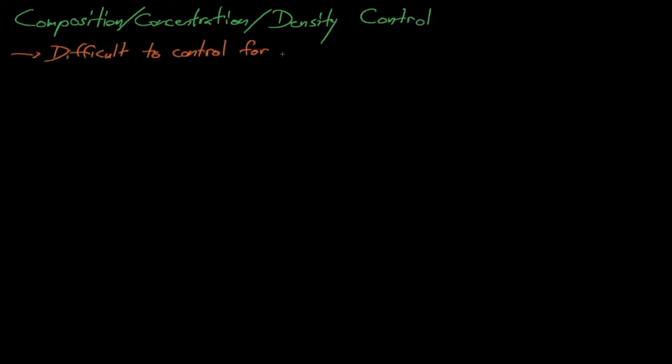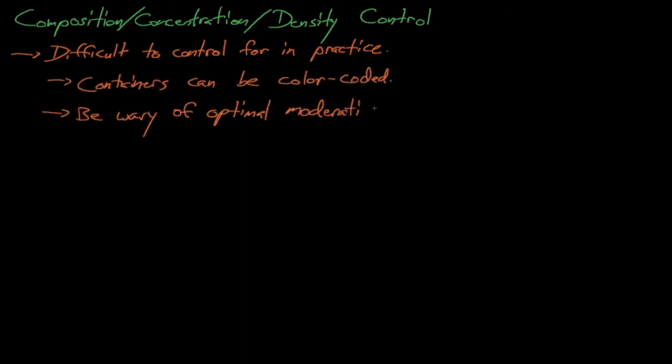Next, we'll discuss composition, concentration, or density control. Concentration control can be very difficult in practice because it's difficult to know the density of fissile material in solutions. Something that we think is low-density uranium might look exactly like high-density uranium, and we might not know until it's too late. Things like color-coded containers can help ensure composition control, but in practice, it's better to design safety limits or the size of geometrically favorable containers for the most reactive concentration that is credible to appear in that container.